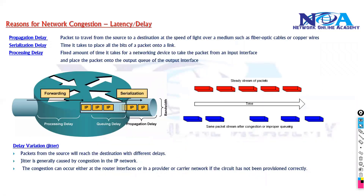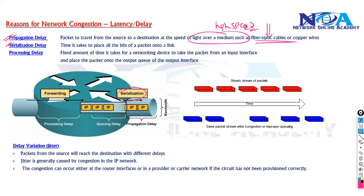End-to-end delay can be divided into multiple components. We have propagation delay, which is the time taken by a packet to travel from source to destination at the speed of the medium — generally close to the speed of light over the cable. We also have serialization delay, which is the time taken by the device to place the packets on the output link. Higher link speed means lower serialization delay.